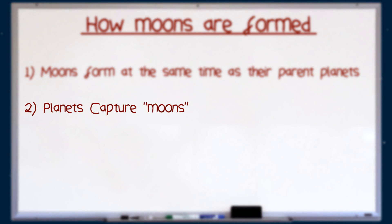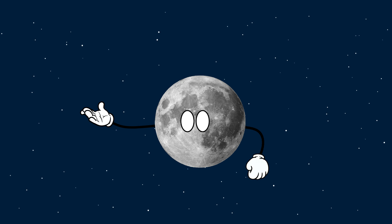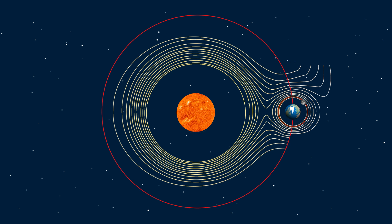Number 2. Planets capture moons. To understand this concept a little better, we should talk about a parameter known as the Hill sphere. The Hill sphere is a region around a planet in which it can hold onto a moon and keep it in a nice, stable orbit. This parameter takes into account the mass of the planet, the mass of the star that the planet orbits, and the distance between them.